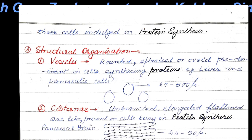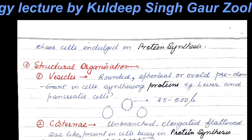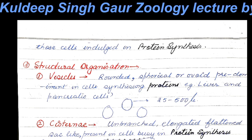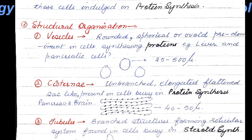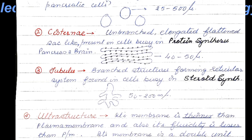The structural organization of endoplasmic reticulum consists of vesicles, cisternae, and tubules — three physical forms in which it manifests. Vesicles are rounded, spherical, and are present mainly in cells active in protein synthesis. Cisternae are unbranched, elongated, flattened, sac-like structures also present in protein-synthesizing cells. Tubules are branched and found in cells actively engaged in steroid synthesis.